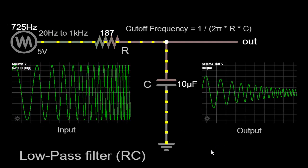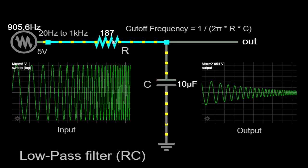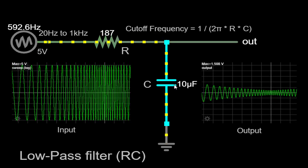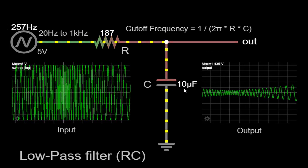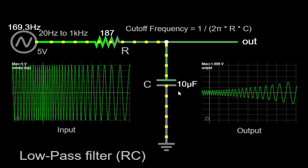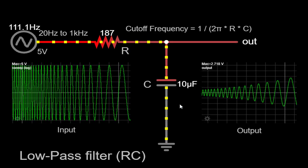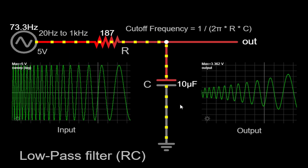The circuit we'll be examining consists of two key components: a resistor, 187 ohms, and a capacitor, 10 microfarads, that are connected in series. This arrangement is known as an RC circuit, which is a fundamental building block in electronics.